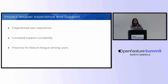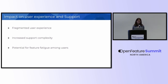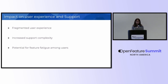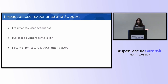Moving next, we have impact on user experience and support. Users are impacted by feature flags, and so is the support team. First, there's fragmented user experience — users at different flag states can have varying experiences, which can eventually lead to a fragmented user experience. Second is increased support complexity — the support team needs to dive deeper to make the user experience better. Third is the potential for feature fatigue among users: if you're shipping features every now and then, users are going to be overwhelmed by new features constantly.